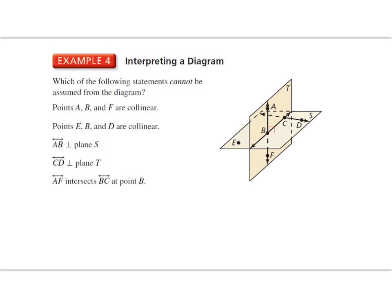All right, let's take a look at example four. Which of the following statements cannot be assumed from the diagram? Points A, B, and F are collinear. Let's take a look.